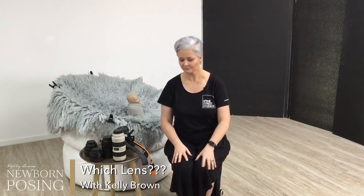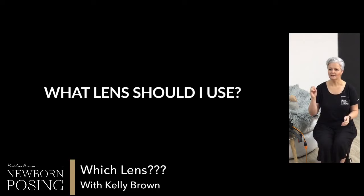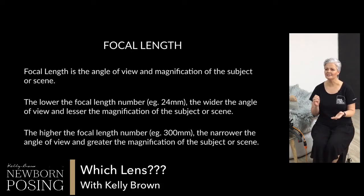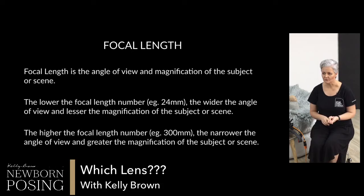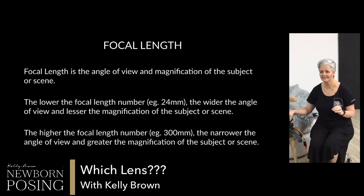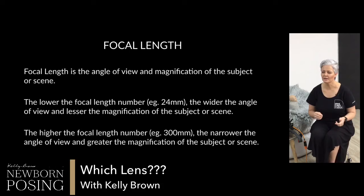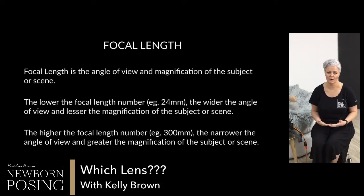Let's go to the slideshow. When we talk about focal length, it's the angle of view and magnification of the subject or scene. The lower the focal length number — like 24mm — means a wider angle of view and less magnification of the subject. The longer the focal length — like 200mm — results in a narrower angle of view and greater magnification of the subject and scene.